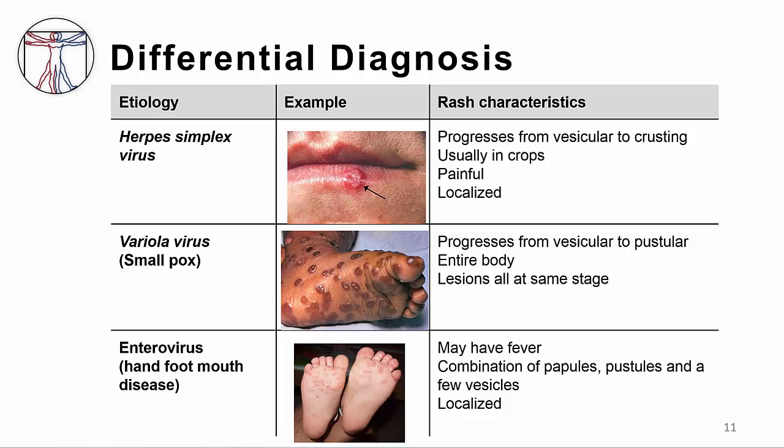Enterovirus infection can cause a rash called hand, foot, and mouth disease. The patients will have fever, like the patients with primary varicella, and the rash will have a combination of papules, pustules, and a few vesicles. The distribution of the rash, which is on the hands, feet, mouth, and sometimes the buttocks, will help you distinguish between VZV and enterovirus.